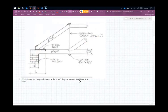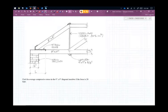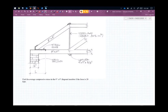The question I'm asking here is: find the average compressive stress in the 12 by 12 diagonal member. Obviously the first thing you need to do is find and know which one we're talking about here.